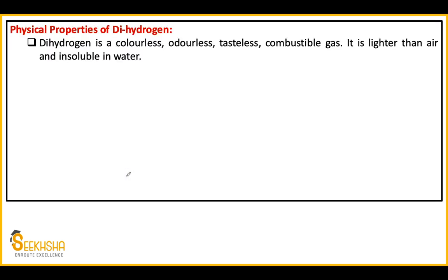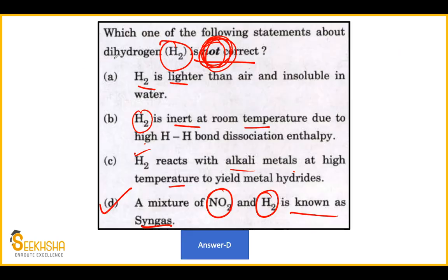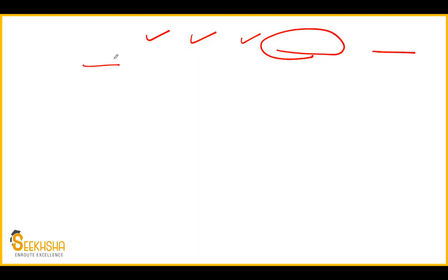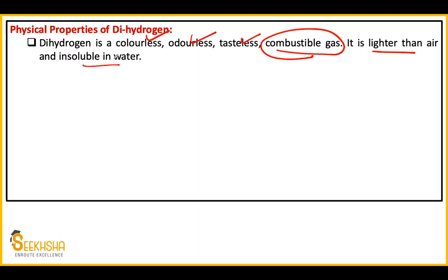Let's look at the properties of dihydrogen. Physical properties: colorless, odorless, tasteless, combustible gas that can catch fire, and insoluble in water. So statement A is right — H2 is lighter than air and insoluble in water. In future exams they may ask whether dihydrogen is colorless, odorless, or tasteless, so understand the full pattern of questions.